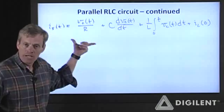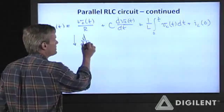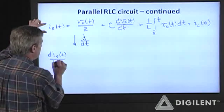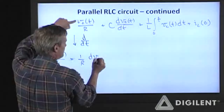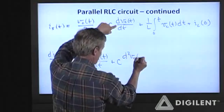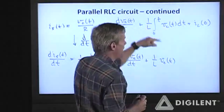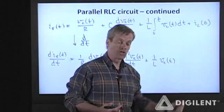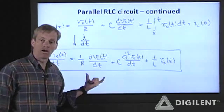Differentiating the integral differential equation with respect to time to get rid of the integral: dI_S/dt = (1/R)·dV_C/dt + C·d²V_C/dt² + (1/L)·V_C(t). The initial condition I_L(0) is just a number, so its derivative is zero and it doesn't appear here. Here is the second order differential equation governing the parallel RLC circuit.